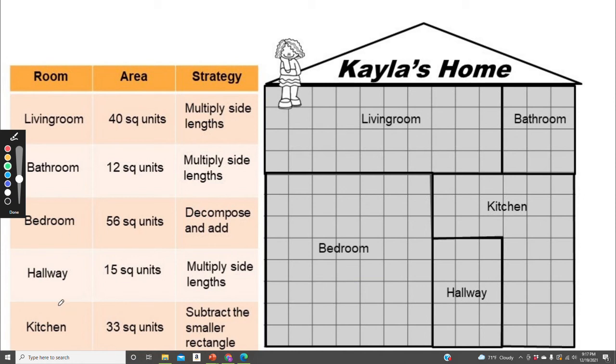Okay, for the hallway I found the answer to be 15 square units, and I know this because 1, 2, 3 times 1, 2, 3, 4, 5. 3 times 5 equals 15.